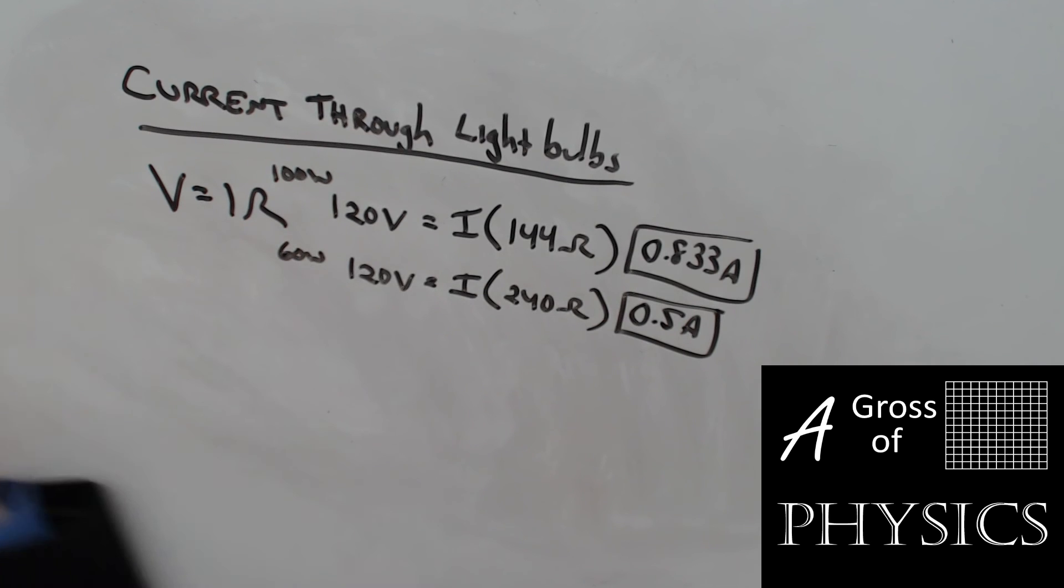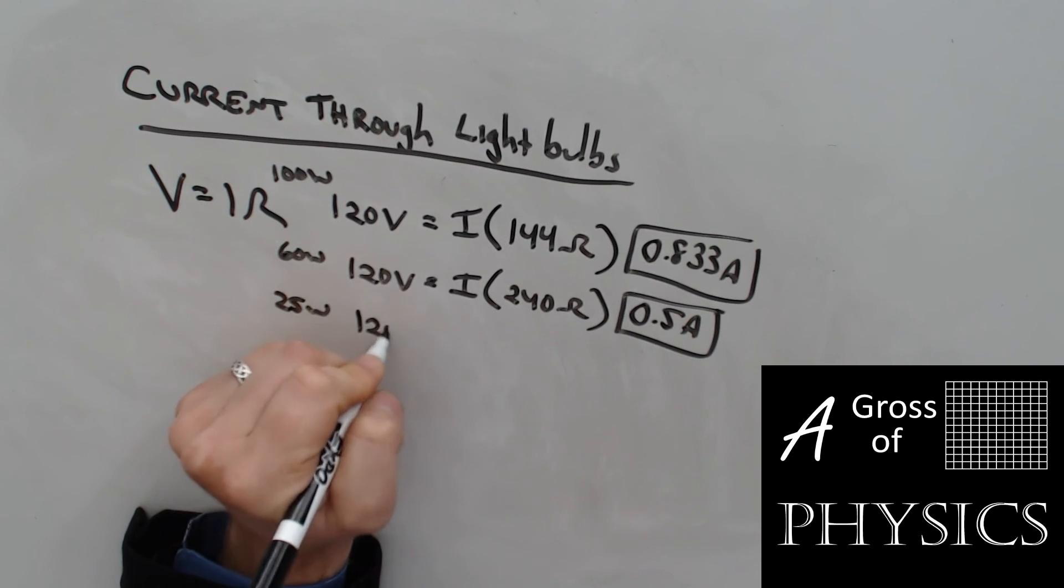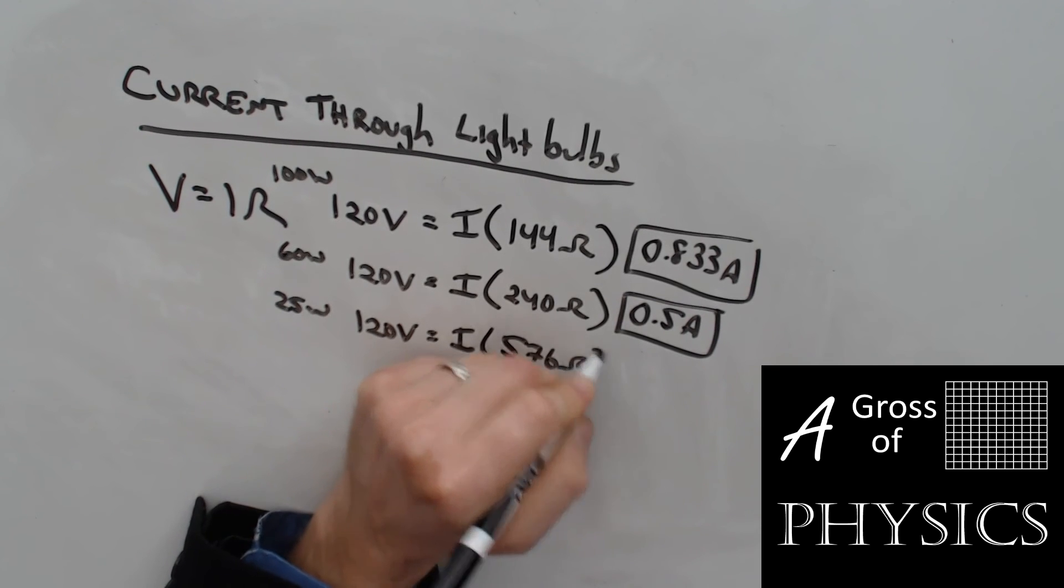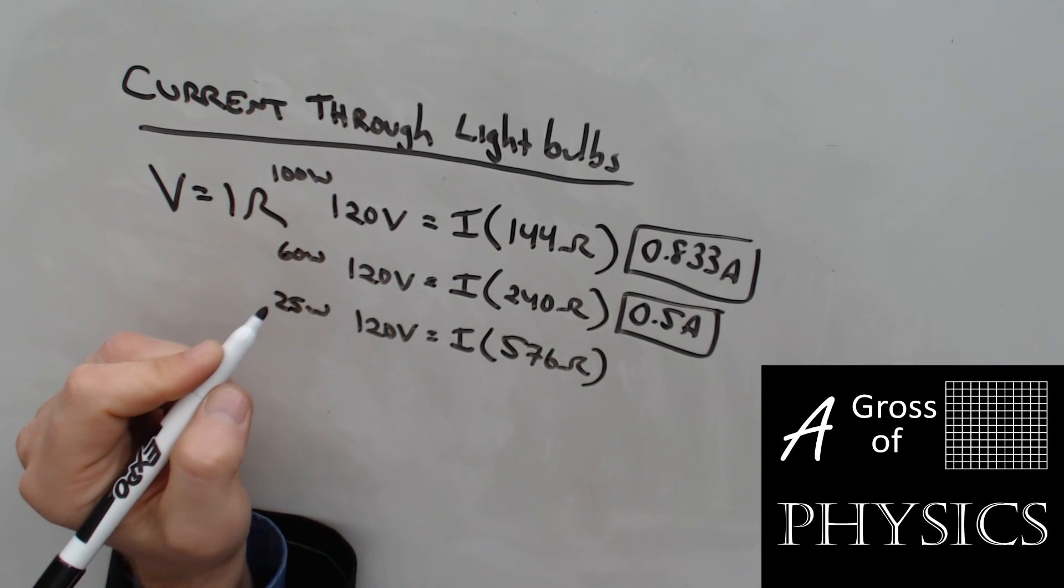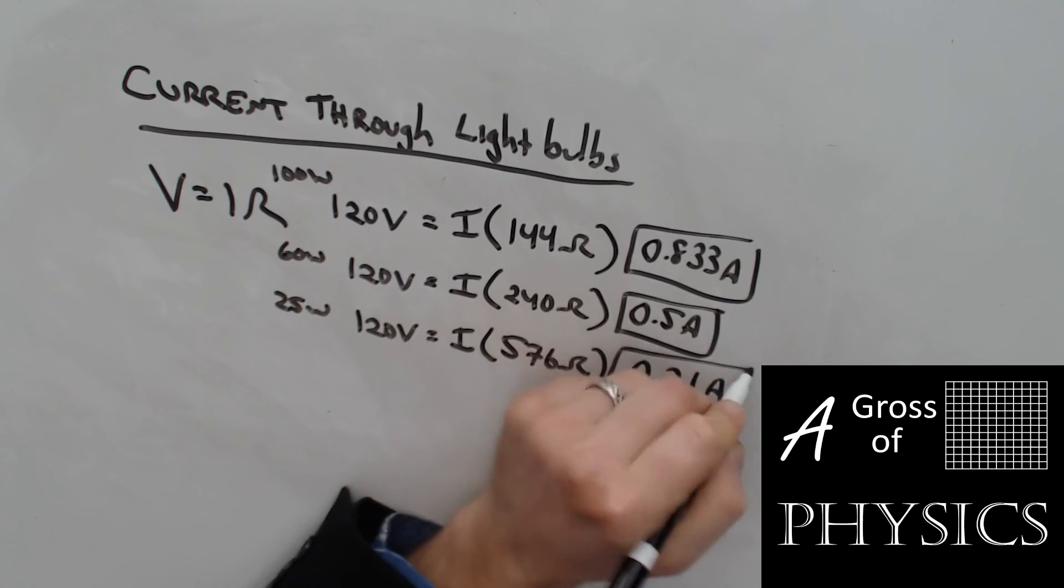Finally, let's do a 25 watt bulb. 120 squared divided by 25, that was 576 ohms. So 25 watts, 120, I, 576 ohms. 120 divided by 576, I get 0.21 amps.